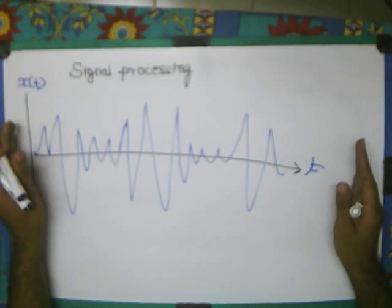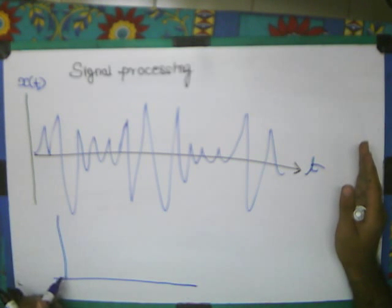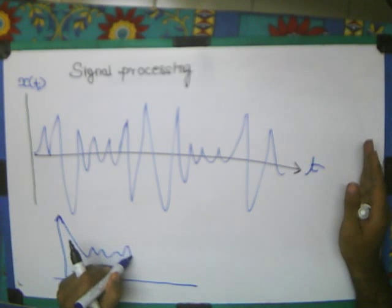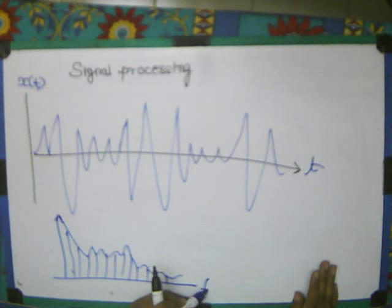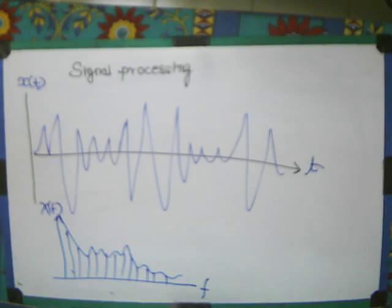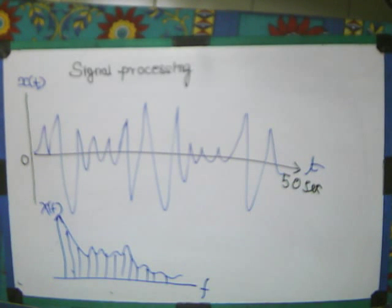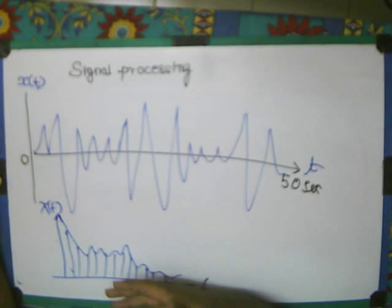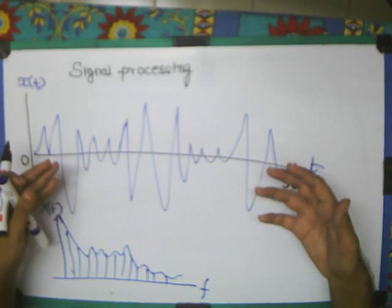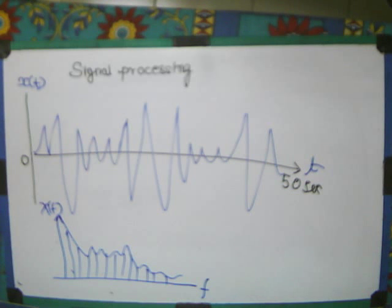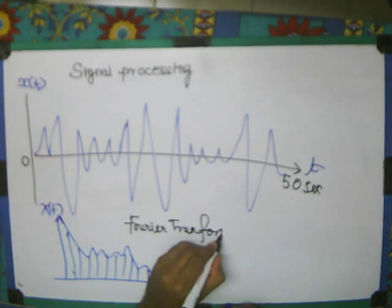So now if we look at this thing, if I take Fourier transform, how will I get this spectrum? I will get a spectrum of frequency, something like this. But is it useful? If I analyze the frequency of this 0 to 50 seconds signal, how many times did the frequency change?